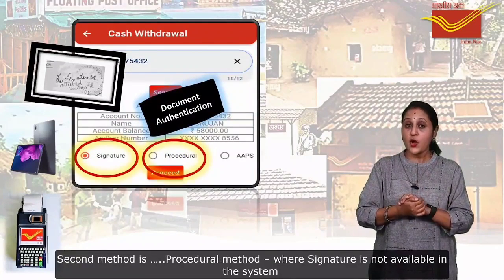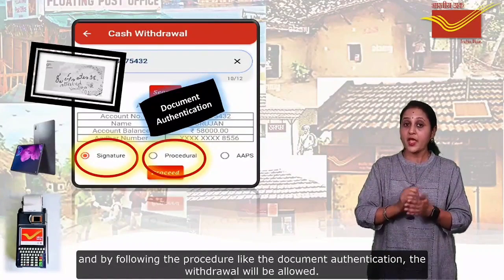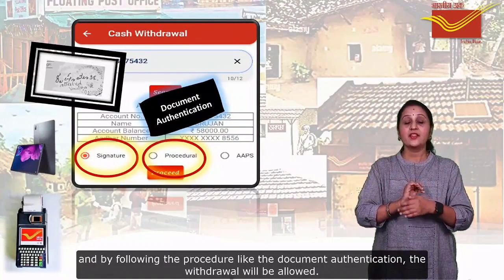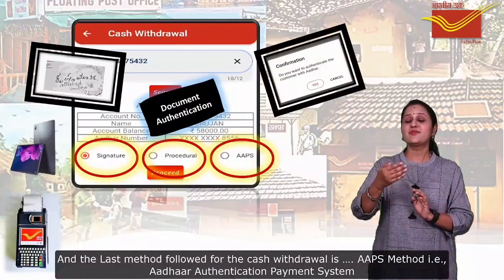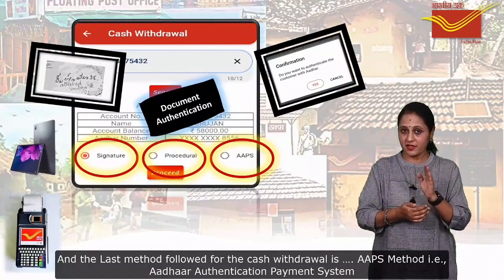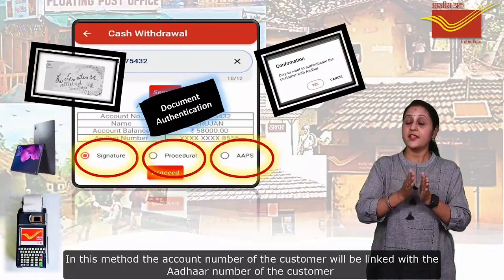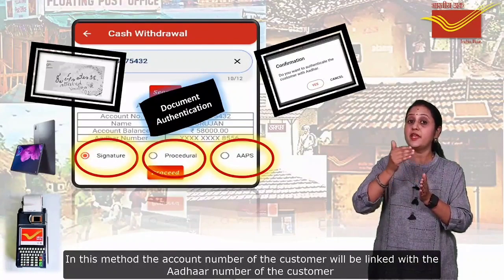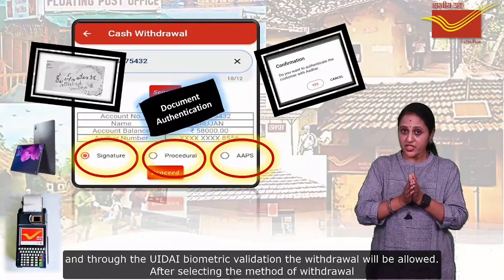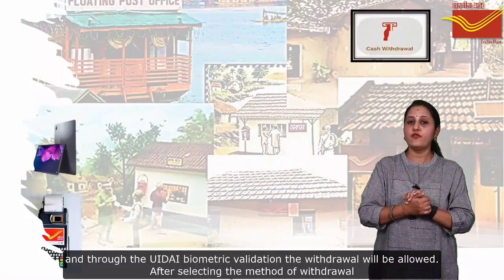The second method is the procedural method, where the signature is not available in the system and by following the procedure of document authentication, the withdrawal will be allowed. The last method is the AAPS method — that is Aadhaar Authentication Payment System — where the account number of the customer is linked to the Aadhaar number and through UIDAI biometric validation the withdrawal will be allowed.